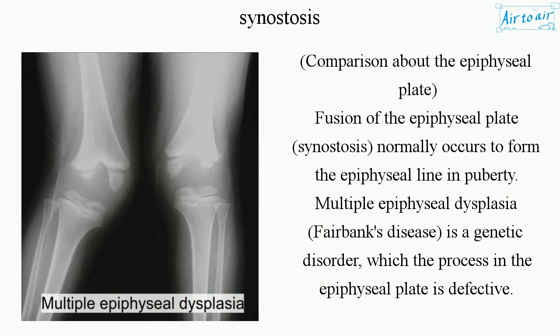Comparison regarding the epiphyseal plate: Fusion of the epiphyseal plate, or synostosis, normally occurs to form the epiphyseal line in puberty. Multiple epiphyseal dysplasia, also known as Fairbanks disease, is a genetic disorder in which the process in the epiphyseal plate is defective.